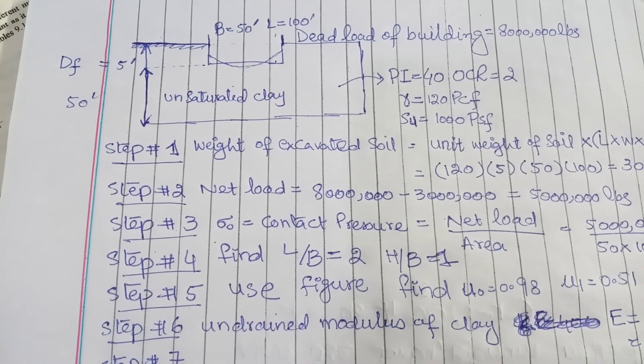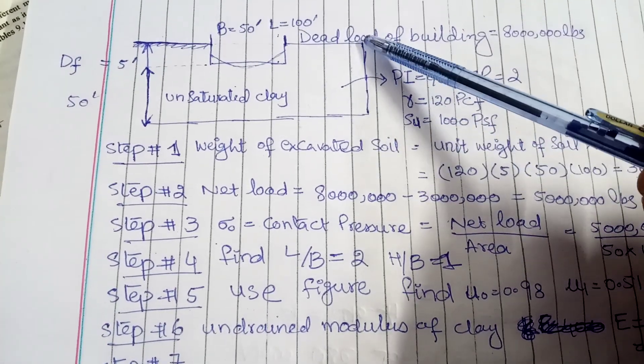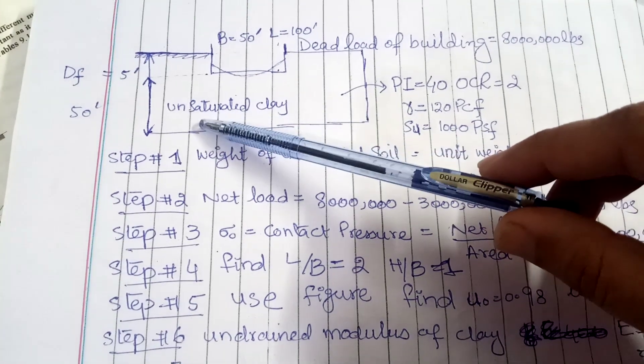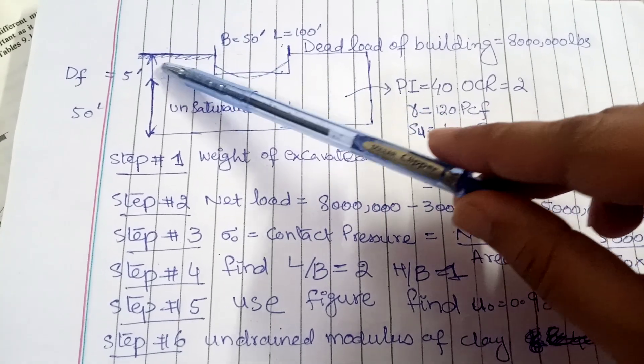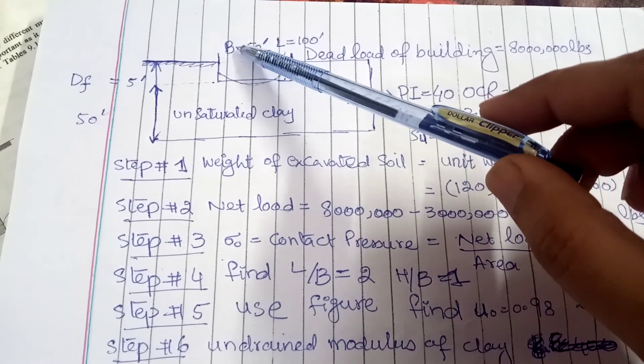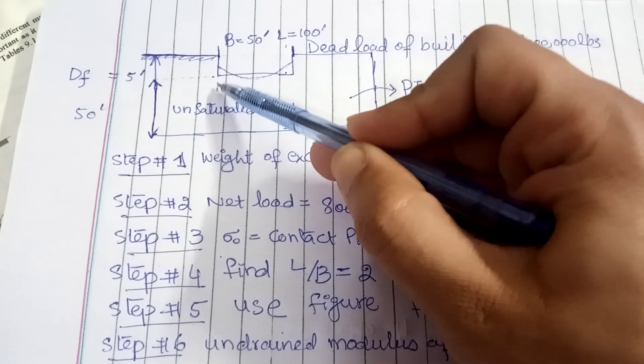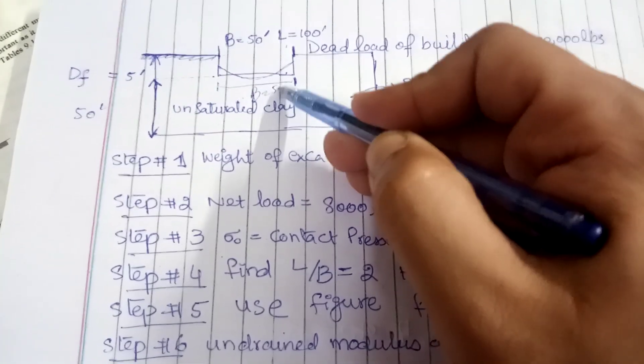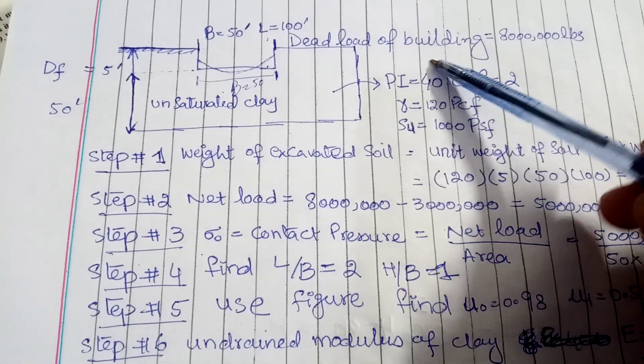In this video I have shared an example which will help you to calculate immediate settlement of a foundation. So let's start. Here you can see I have made a diagram. This diagram shows the soil type, the area which is covered with foundation, and the depth of foundation is 5 feet. So the dimension of foundation is B, the width of foundation, from here to here, and L is the length of foundation.